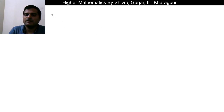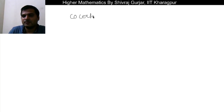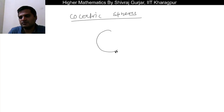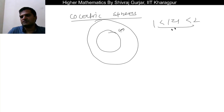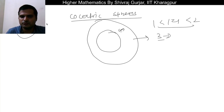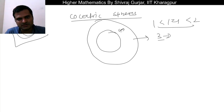Let's take another example: concentric spheres. In 2D, the region between two concentric circles is not simply connected because movement is restricted to 2D — any closed curve around the inner circle cannot be shrunk to a point without crossing the boundary. That is why it is not simply connected.